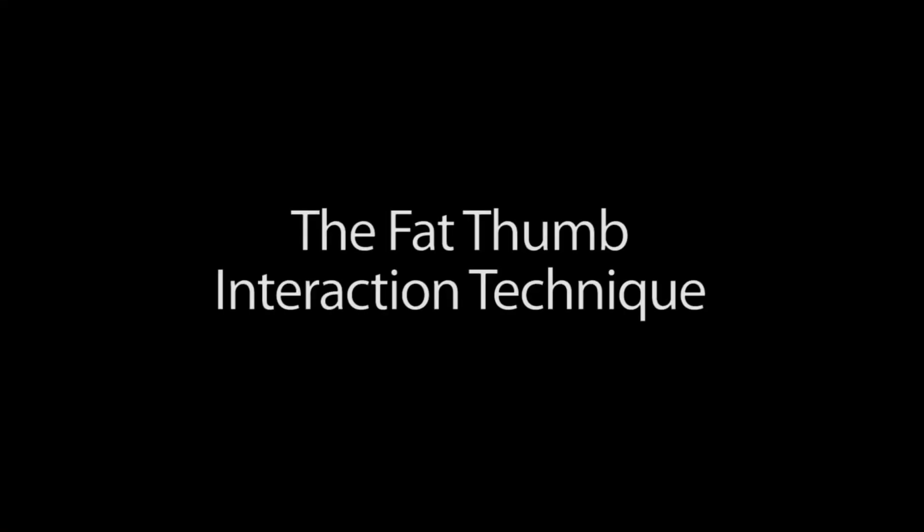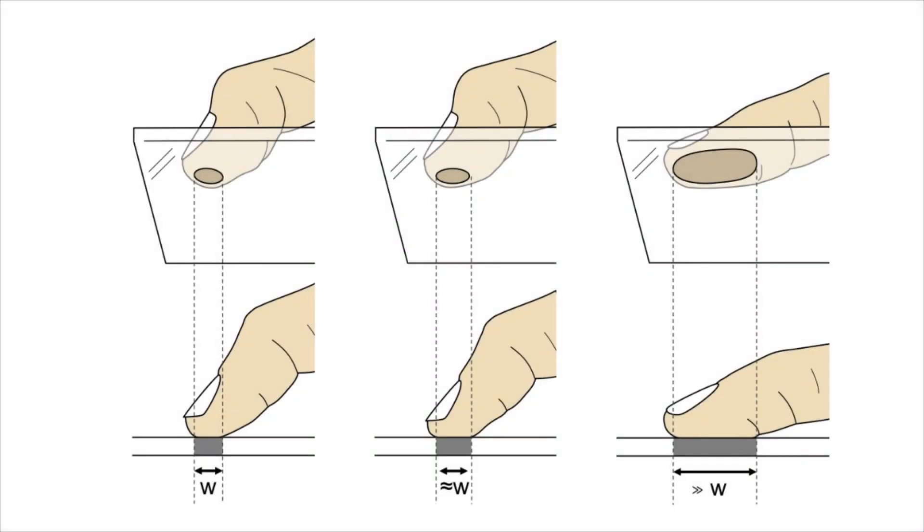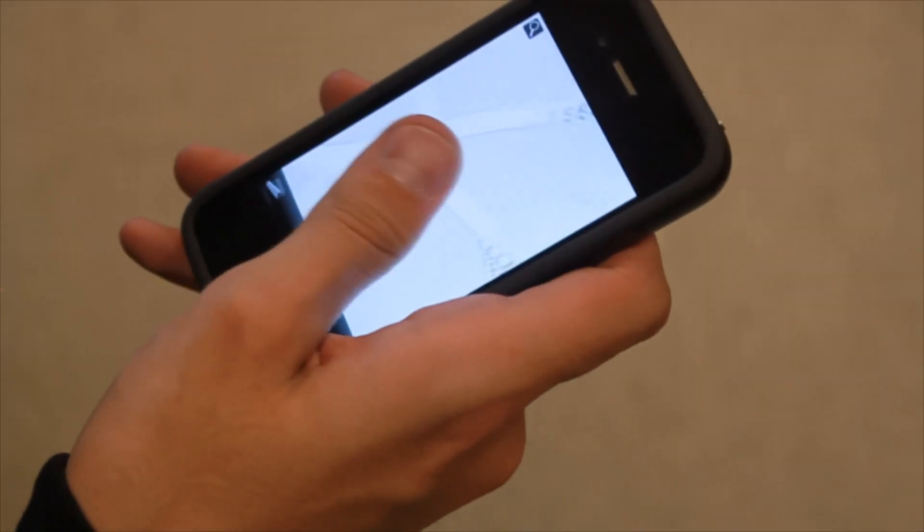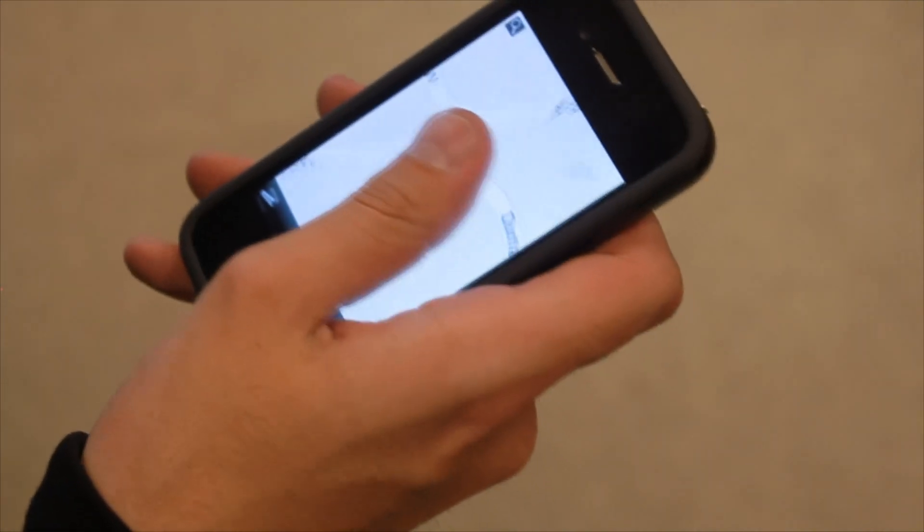To mitigate this problem, we created the fat thumb interaction technique. It takes advantage of the thumb's contact size to allow for fluid transitions between different interaction modes. The thumb's contact size determines the mode, for example, switching between panning and zooming.